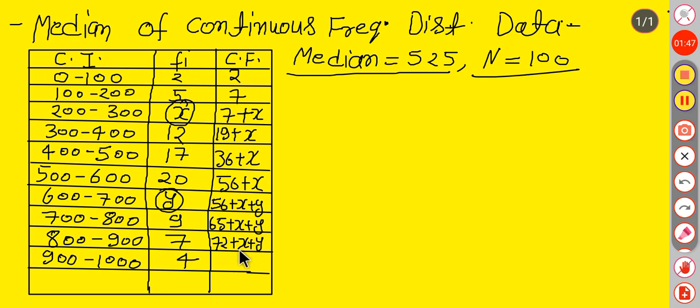Thereafter 72 plus x plus y. Finally 76 plus x plus y. And it is given that n is equal to 100.